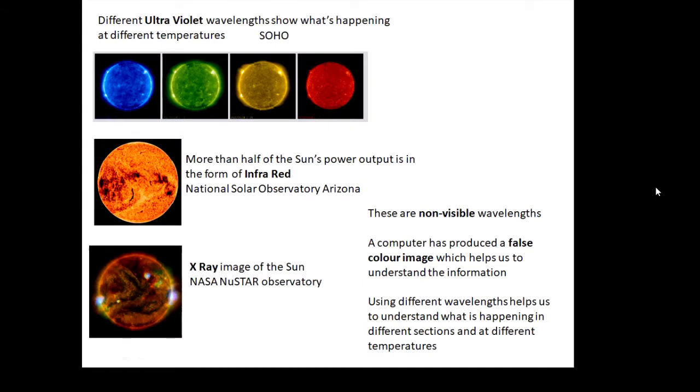We can observe the Sun in different wavelengths - ultraviolet, infrared, and x-rays. Why? When you look at different wavelengths, you're looking at different temperatures. X-ray images show very high temperature areas. We can see what's happening at different temperatures and in different layers of the Sun. Hydrogen alpha is very good for looking at the chromosphere.